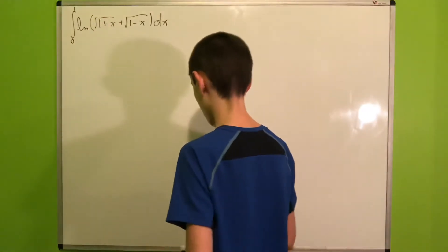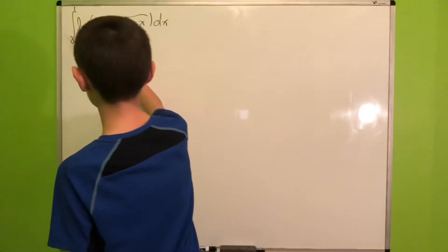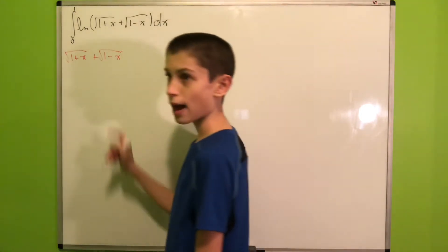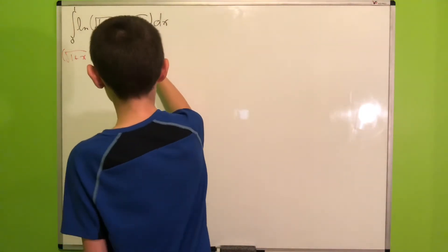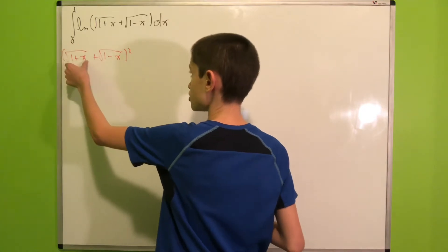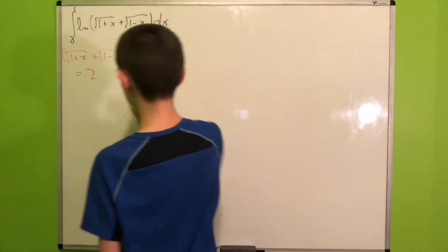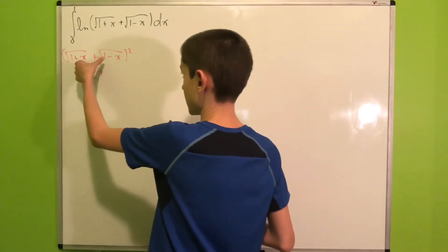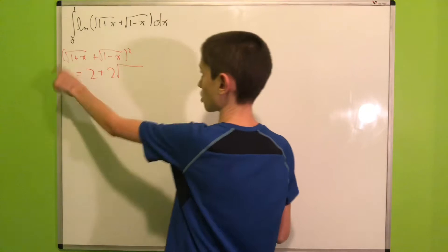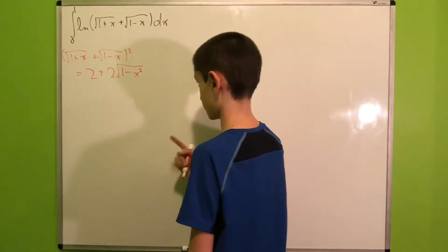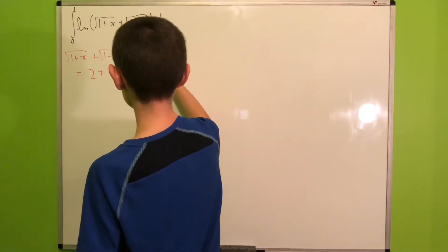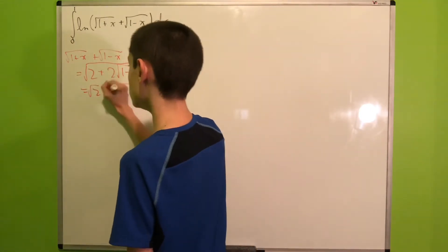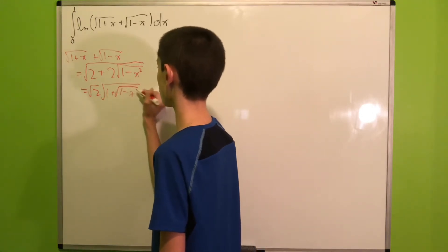Let's take a look at the argument of our logarithm, namely square root of 1 plus x plus square root of 1 minus x. What happens if we square this quantity? We get 1 plus x plus 1 minus x, which is just 2 because the x cancels, and then plus 2 times their product — the square root of 1 plus x times 1 minus x, which is square root of 1 minus x squared. If we take the square root on both sides, we can factor out the square root of 2 to get square root of 2 times square root of 1 plus square root of 1 minus x squared.